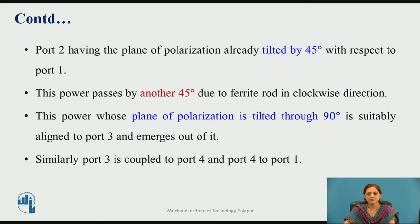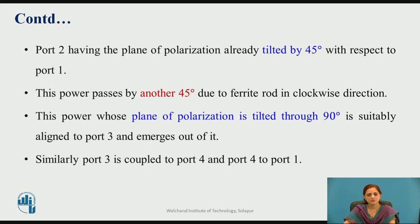When the input is at port 2, the plane of polarization is already tilted by 45 degrees with respect to port 1. This power passes by another 45 degrees due to the ferrite rod in the clockwise direction. The plane of polarization is now tilted through 90 degrees and is suitably aligned to port 3, so the signal emerges out of port 3. Similarly, port 3 is coupled to port 4, and when input is applied to port 4, it comes out of port 1.